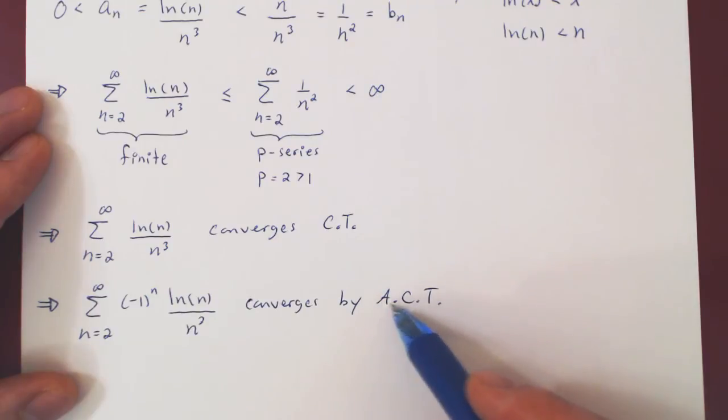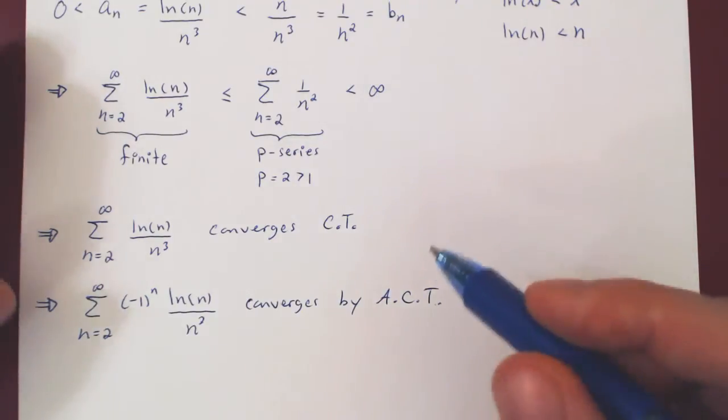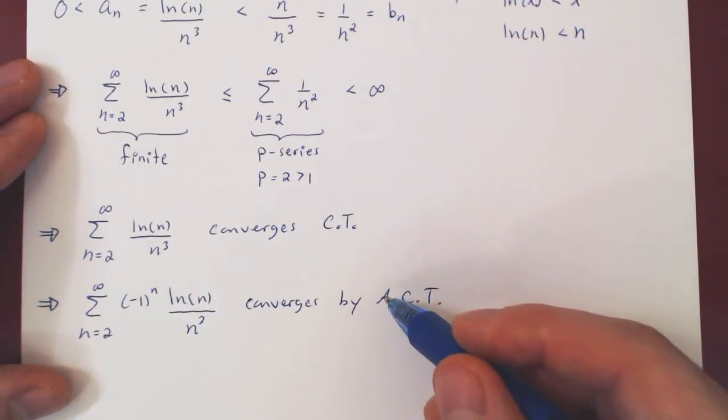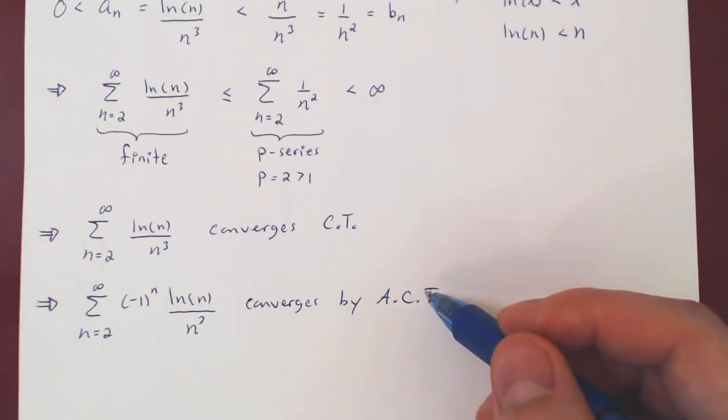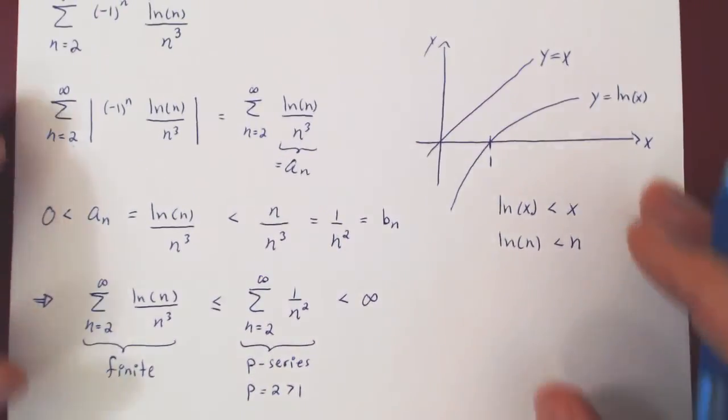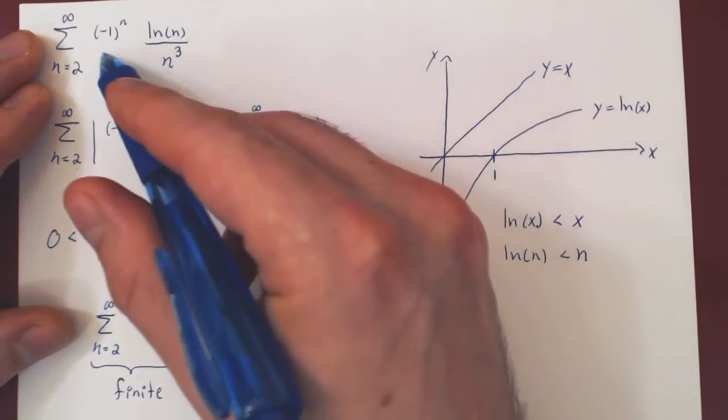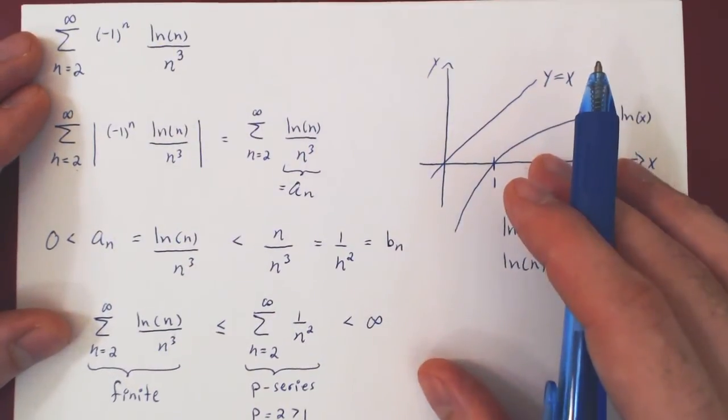Again, by the alternating convergence test. By, sorry. By the absolute convergence test. And so our conclusion is that the initial series converges absolutely.